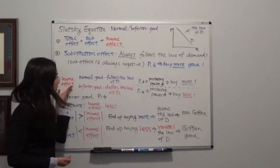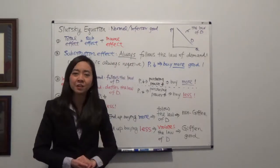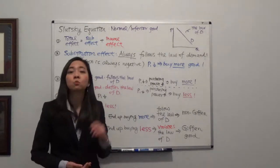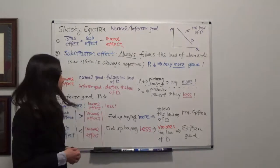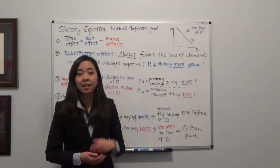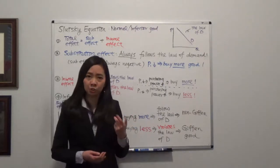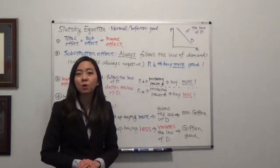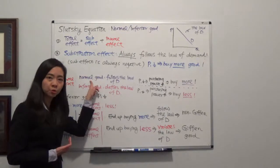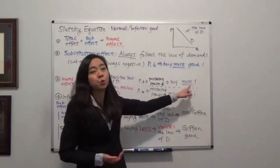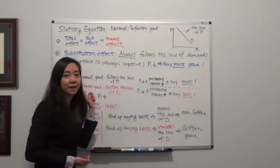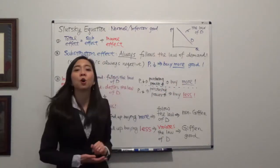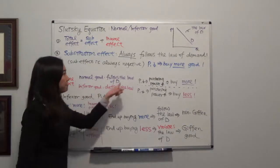What about income effect? Does it also follow the law of demand? That depends on whether you're talking about a normal good or an inferior good. For a normal good, income effect will follow the law of demand. If the price of good one goes down, even though your income may not change, your purchasing power has gone up. So income effect tells you that you are relatively wealthier and good one is a normal good — something you like — so you should buy more. When price goes down, income effect tells you to buy more, following the law of demand.